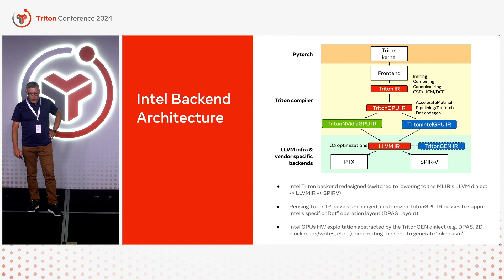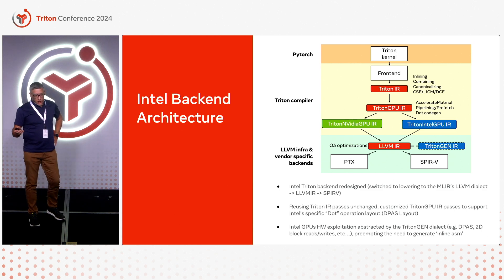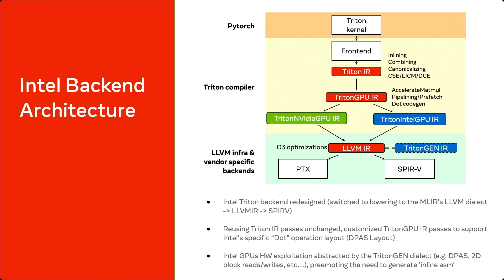We used to have a Triton backend at Intel that generates SPIR-V directly, and we changed our design to generate LLVM IR instead of SPIR-V. Our low-level backend still takes SPIR-V as input, so we still have to translate the LLVM IR to SPIR-V. To do that, we used the same tool we use for our OpenCL compiler, which is very stable and gave us very good performance.